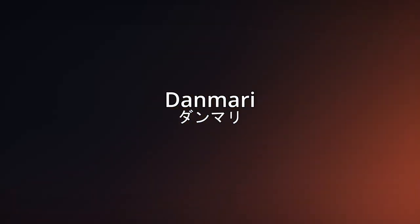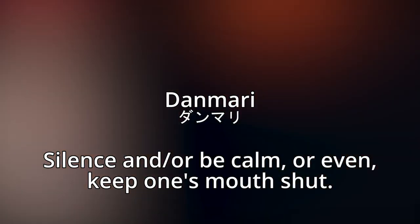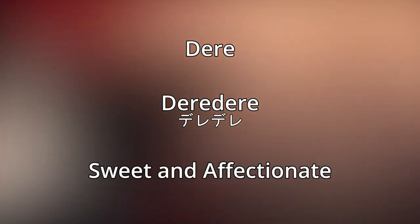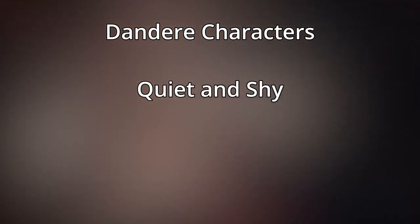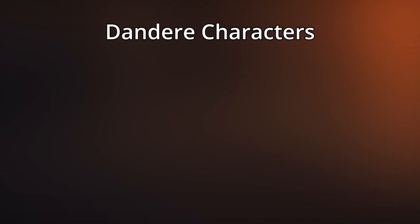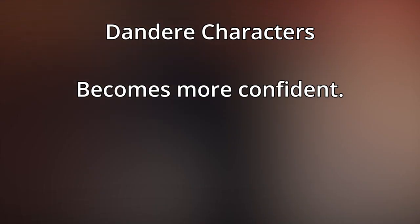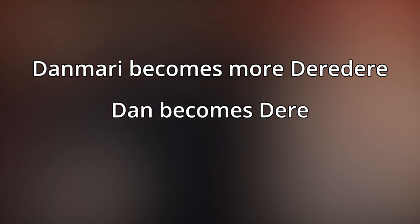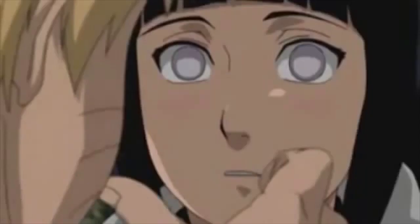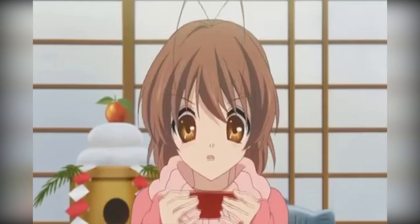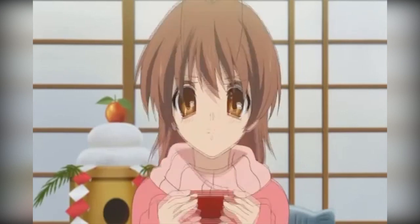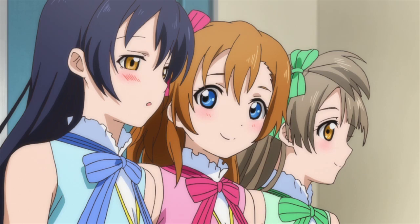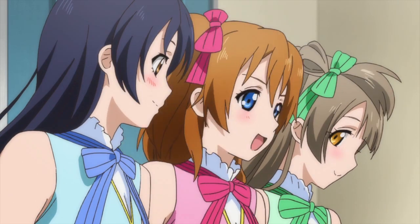So let's go ahead and get started with the first Dere type: Dandere. Dan comes from the Japanese word Danmari, meaning silence and or be calm, or even keep one's mouth shut. And Dere comes from Dere Dere, meaning sweet and affectionate. Dandere characters are depicted as quiet and shy, only talking to their close friends and or occasionally their love interest. In most cases, throughout the story, the character becomes more and more confident and is eventually able to confess their feelings. Well-known Dandere characters include the likes of Hinata from the Naruto series and Nagisa from Clannad. Both represent the quintessential definition of a Dandere. However, not all Dandere are looking for that special someone. Characters like Mio from K-On and to an extent Umi from Love Live both grow and slowly become more courageous over time for their friends, rather than being fueled by any form of romance.